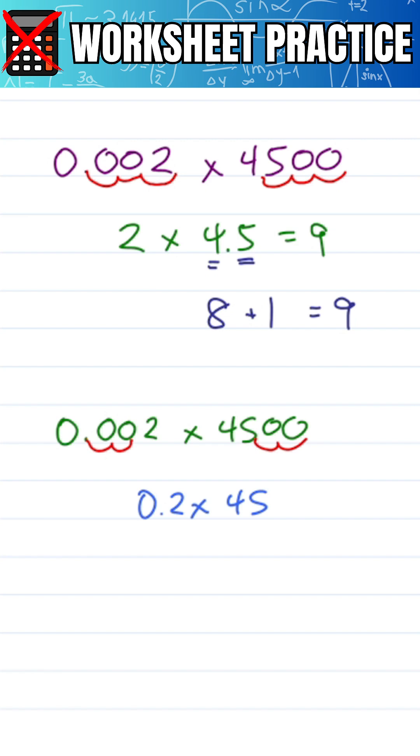Which is slightly more difficult but still works. Because you do 2 times 45 gives you 90, but this is a decimal, so you move it back one space to get 9.